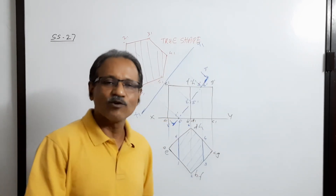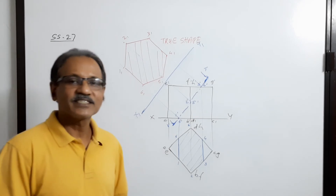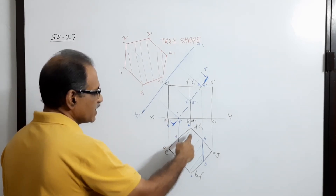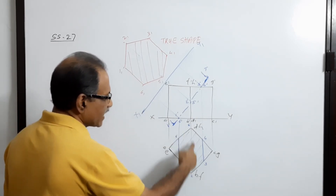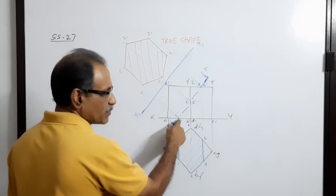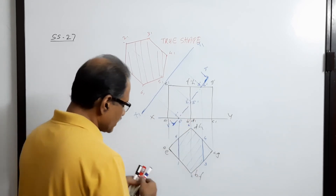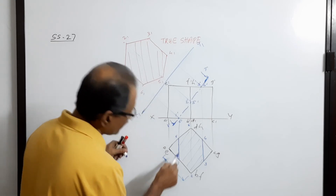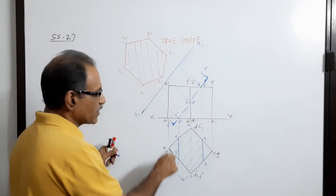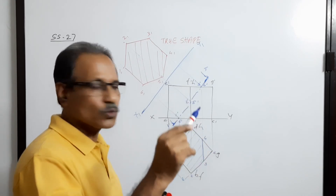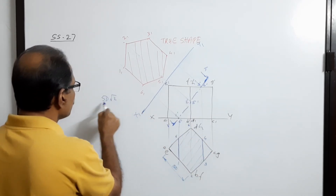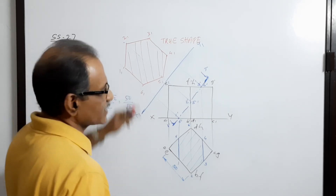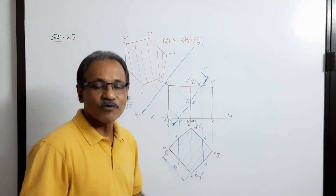The true shape obtained is a regular hexagon. What is the side of this hexagon? It is half of the diagonal of the cube face. Since the cutting plane passes through the midpoint, the side equals half of the face diagonal. If the side of the cube is 50, the face diagonal is 50√2, so the hexagon side is 50√2 / 2, which equals 50 / √2.